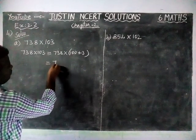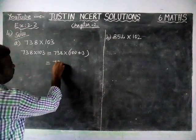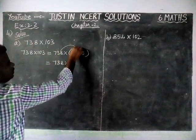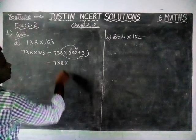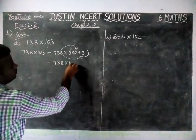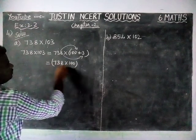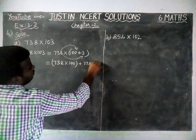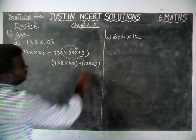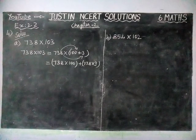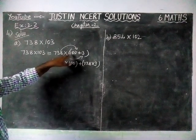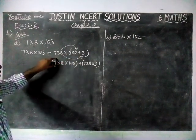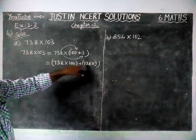We are going to use the distributive property of multiplication over addition. Now, 738 into (100 plus 3) becomes 738 into 100, plus 738 into 3. The distributive property states: a into (b plus c) is equal to a into b plus a into c.